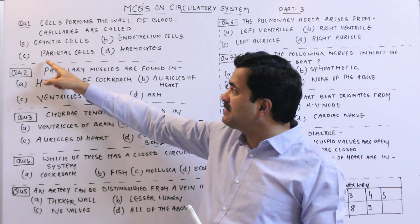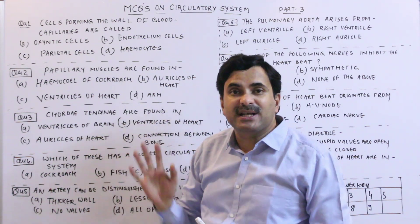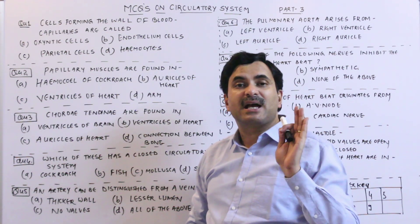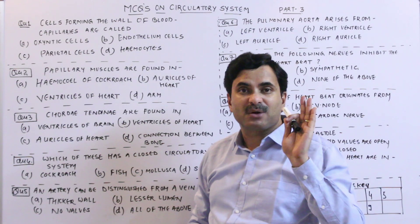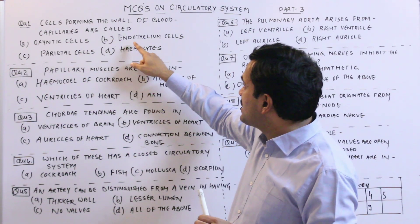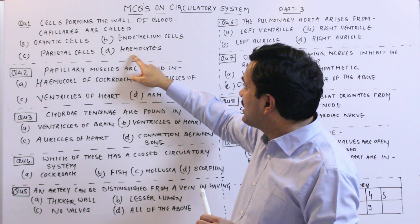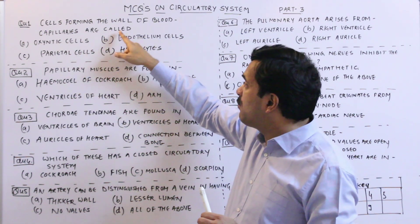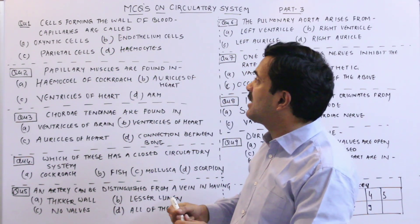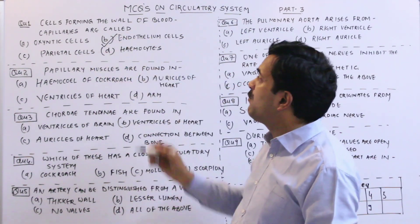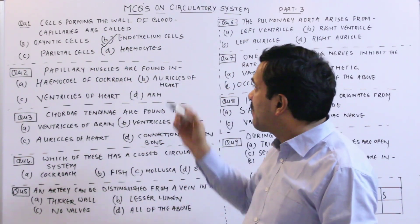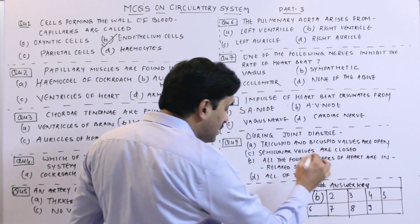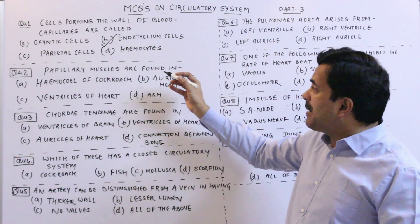We can exclude options A and C because oxyntic cells and parietal cells are found in the stomach and are associated with the digestive system. The remaining options are endothelium cells and hemocytes. The cells forming the wall of blood capillaries are called endothelium cells. So question number one has the answer B.